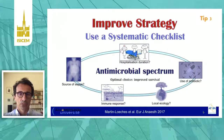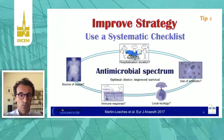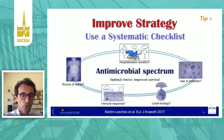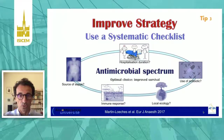Use a systematic checklist including hospitalization duration, previous hospitalization in the last 90 days, previous use of antibiotics in the last 90 days, local ecology — you are best placed to know that — the immune response of your patients, and the source of sepsis: whether it is the lung or the abdomen. When you have this checklist, you can provide the best treatment.